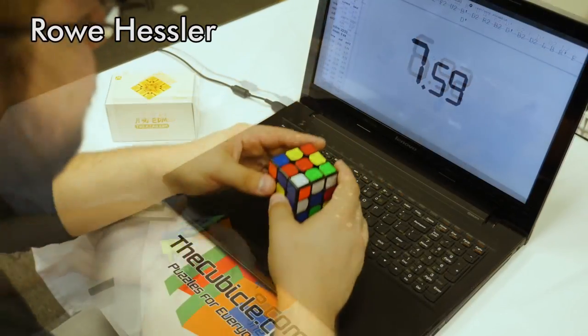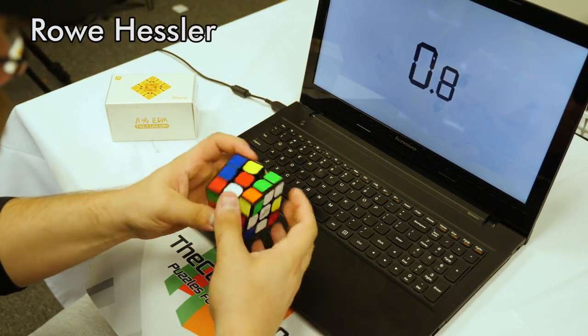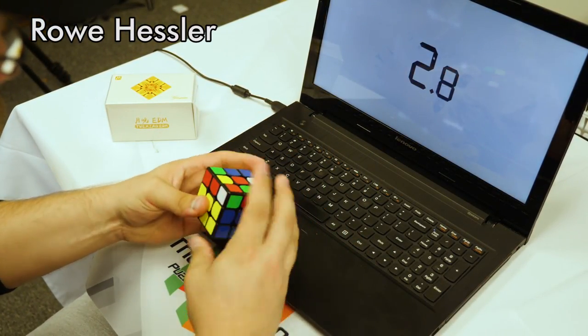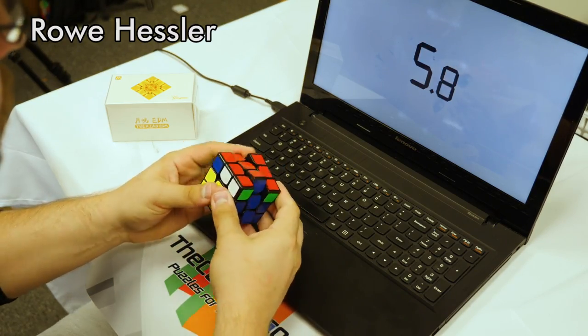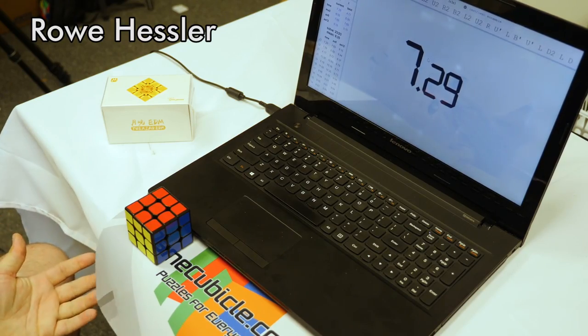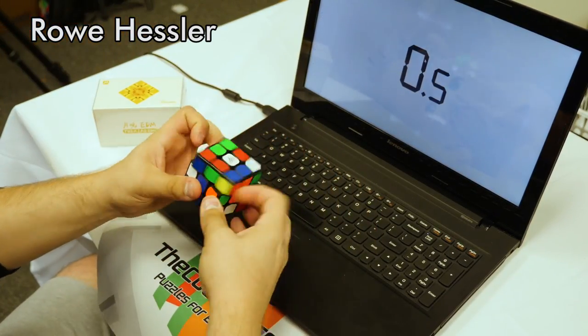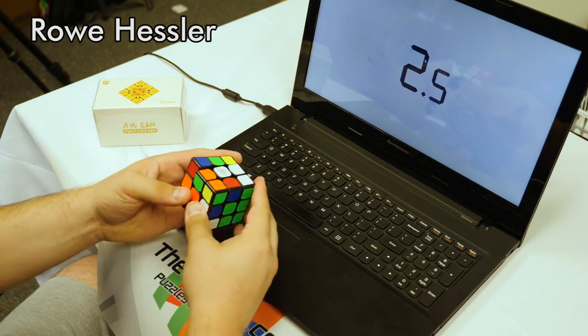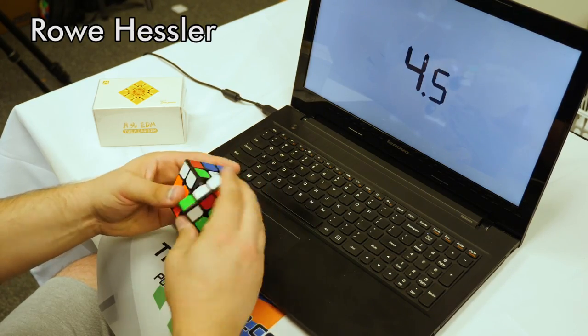This puzzle has been giving me strange lockups during this small session. There was one solve where the lockups on the last layer were so bad that I got a 7 with a sub 3 F2L, which was extremely disappointing. Anyway, the Yuexiao EDM is most definitely not for me and it does not compare to current top level 3x3s, but there may be solvers out there who will enjoy this puzzle.